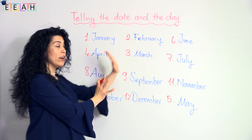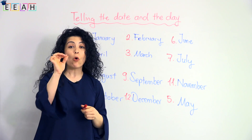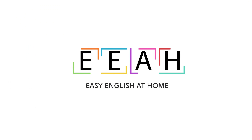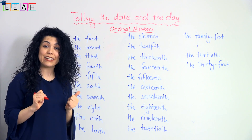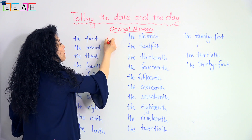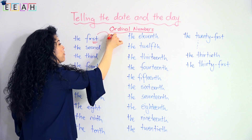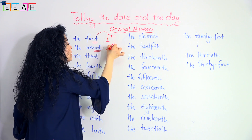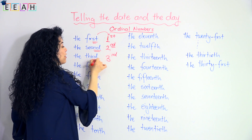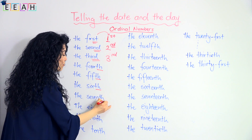Let's put the months aside because we need them to say the date. The next thing to learn is the ordinal numbers. We use these numbers to write the date. We add the last two letters to the top — the first. For the second, we add the same thing — the last two letters. Third works the same way.